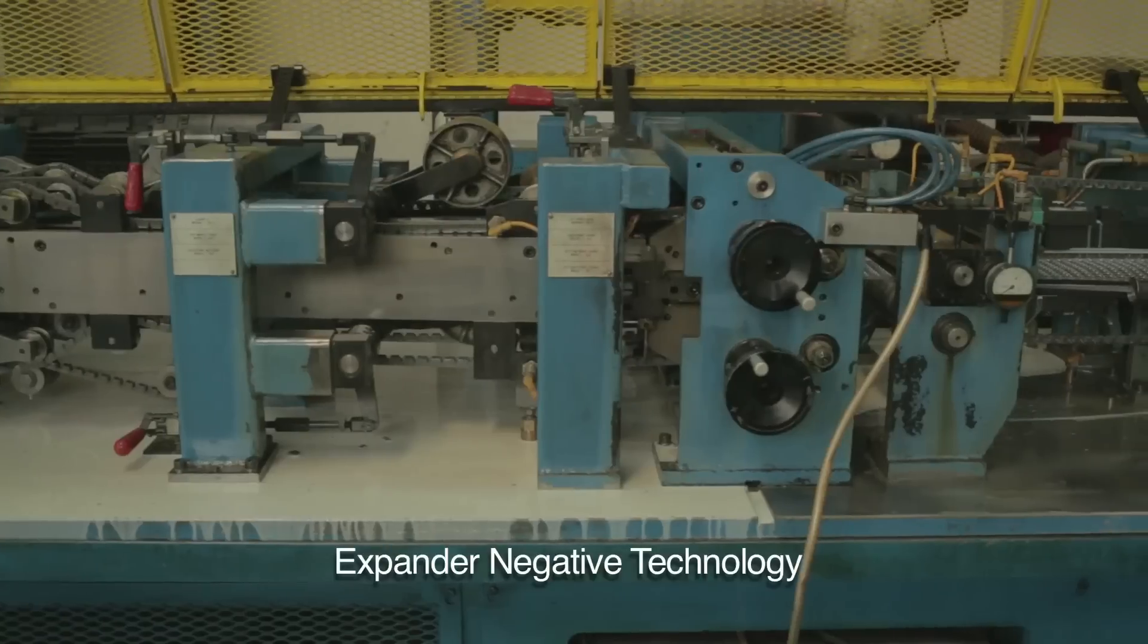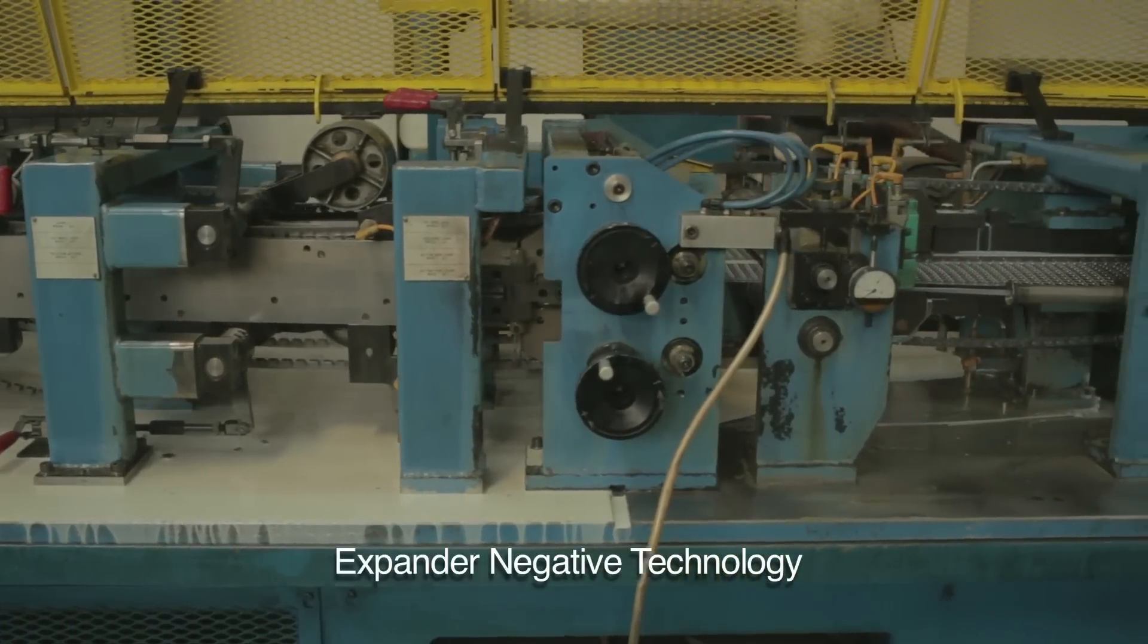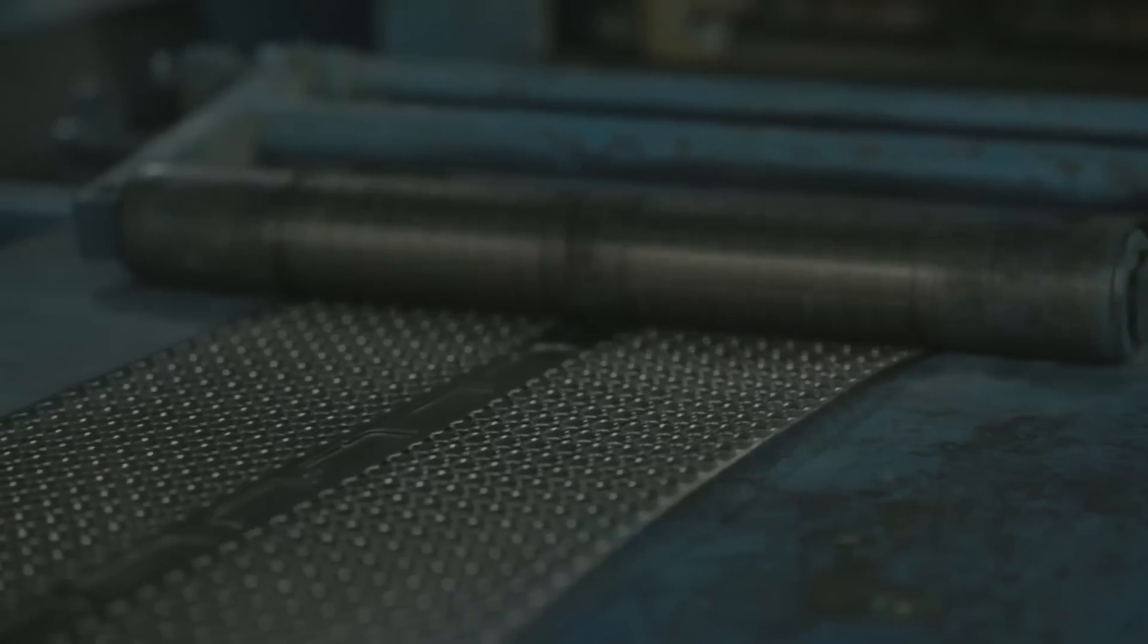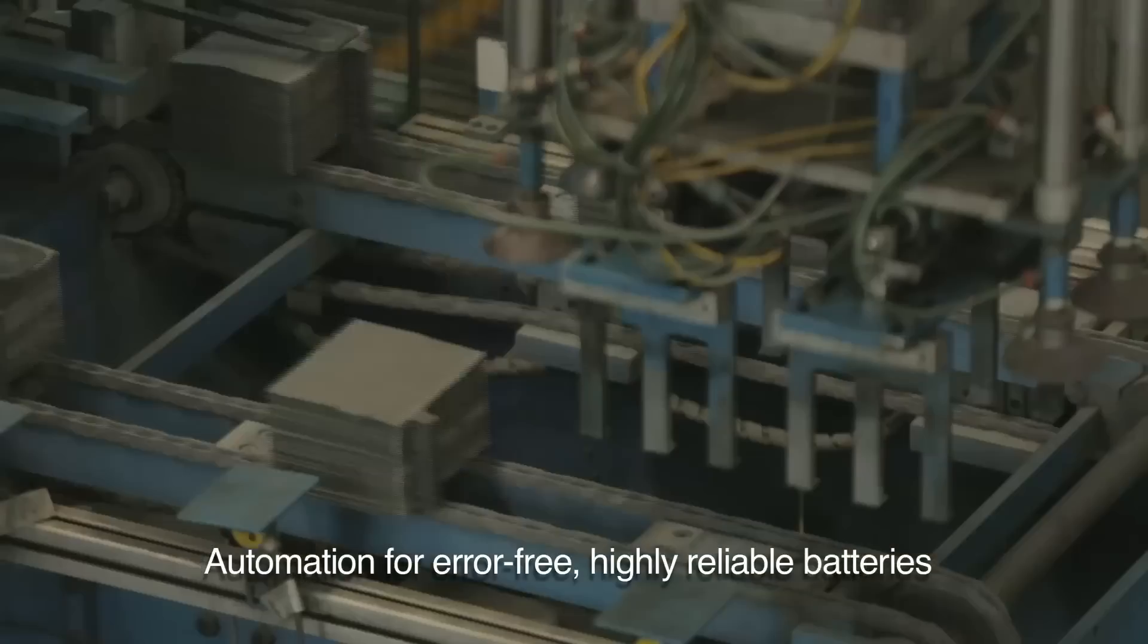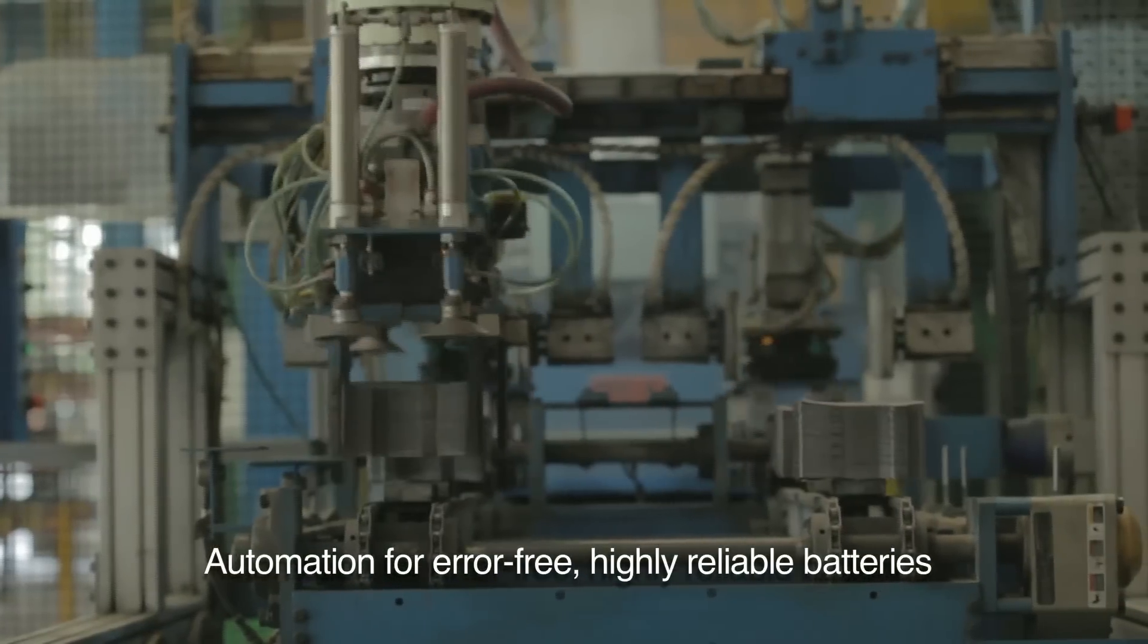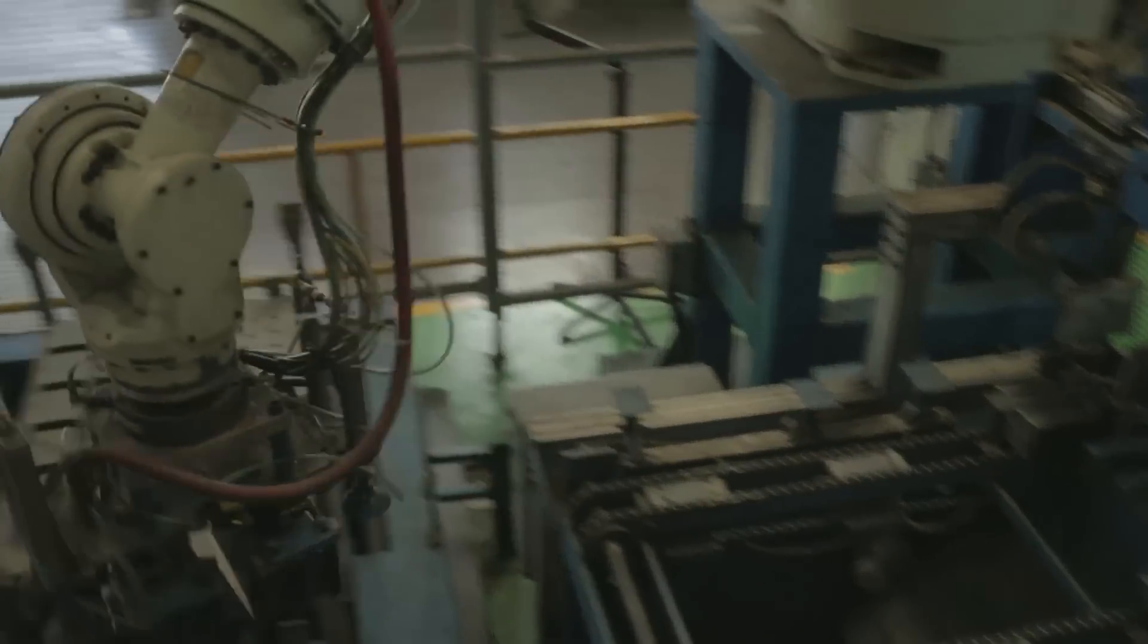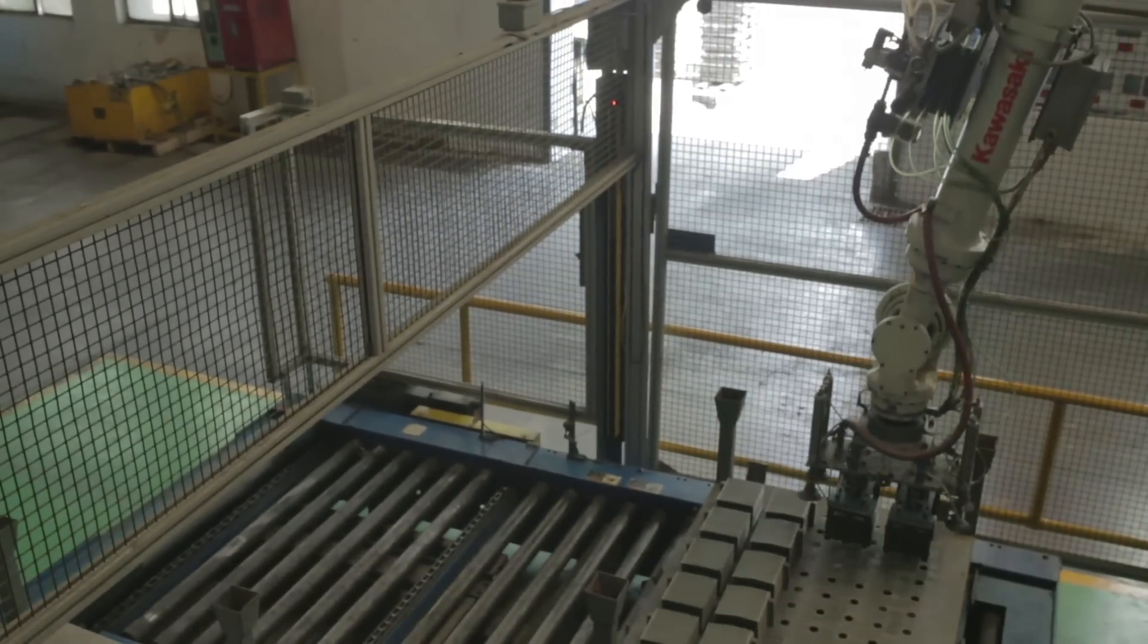The powerful character of the materials has to be carried forward without any loss of performance. The plates are made using the fully automated expander negative technology. Automation ensures plates are untouched by hand, minimizing chances of battery failure, and alloy and paste are perfectly blended together to deliver power.